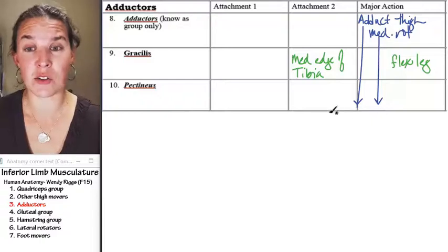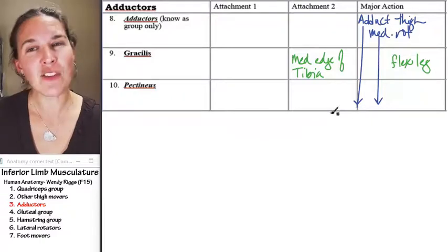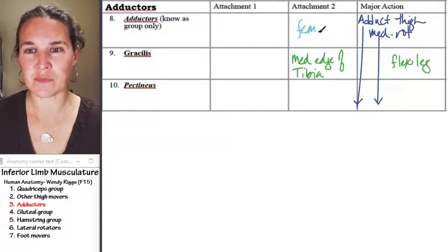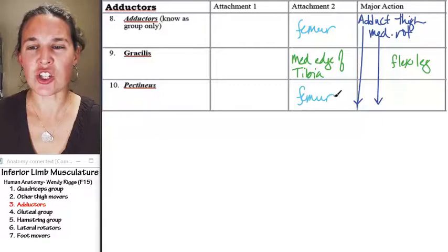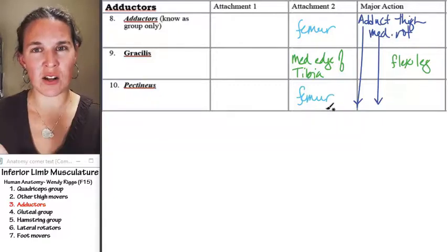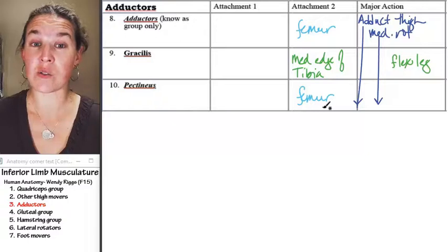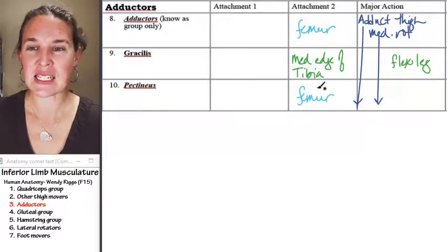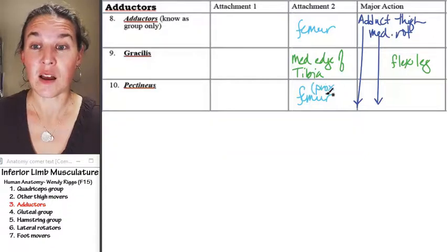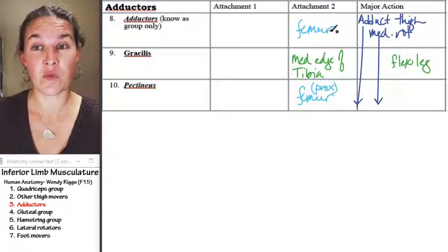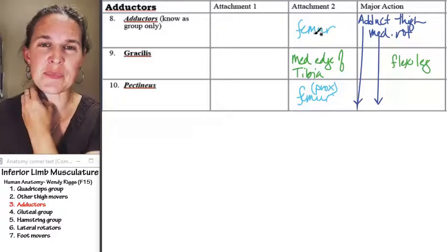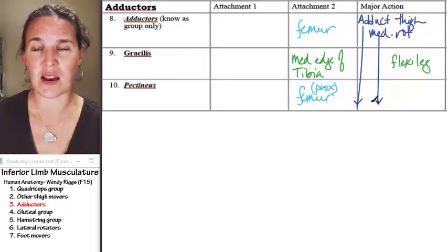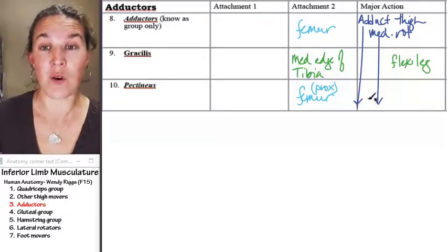Everybody else, the distal attachment is the femur. I'll show you a picture in a second on our website. I'll show you the image of how the adductors are organized. Pectineus is the most proximal on the femur for this group of muscles. There's like four adductors that have their own special names, but we won't learn all their names.